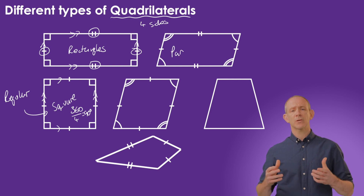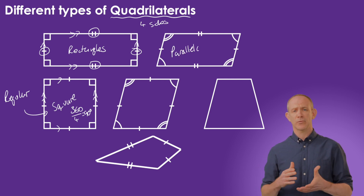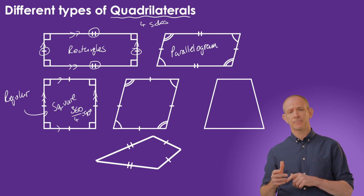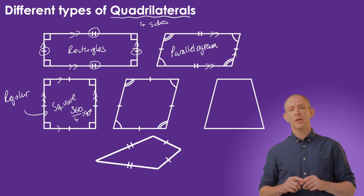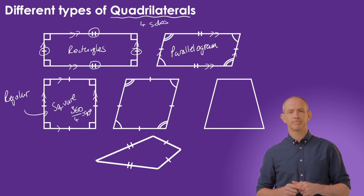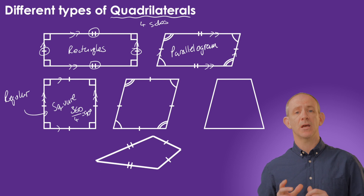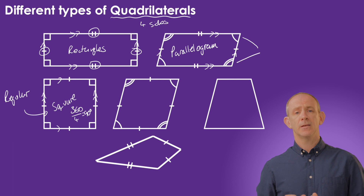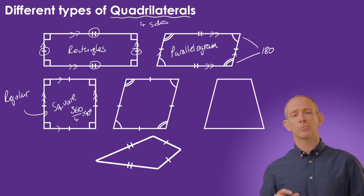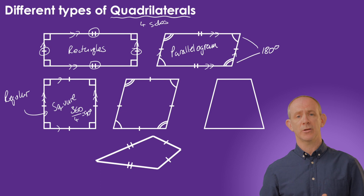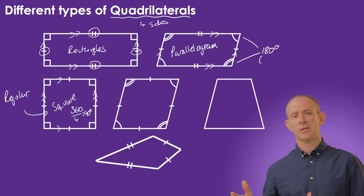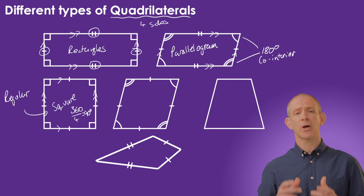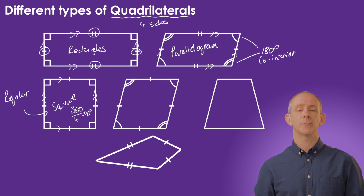In the top right we've got something that looks like a squashed rectangle — this is called a parallelogram. The opposite sides are the same length and also parallel. Another property of a parallelogram is that the opposite angles are the same size. If we look at a parallelogram, the two angles on the left-hand side will add up to 180, and the two angles on the right-hand side will add up to 180. This looks very similar to our co-interior rule from parallel lines.